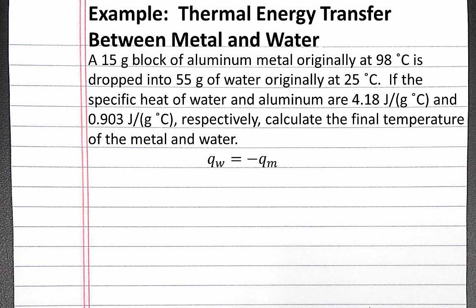Our equation for Q for the water is the mass of the water times the specific heat of the water times the change in temperature for the water. The mass of our water is 55 grams, its specific heat is 4.18 joules per gram degree Celsius,